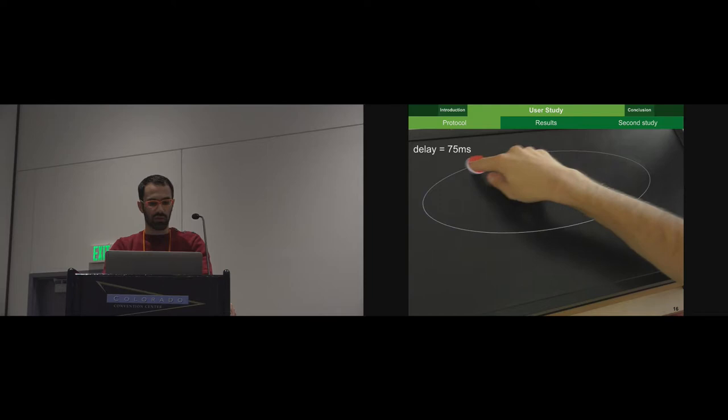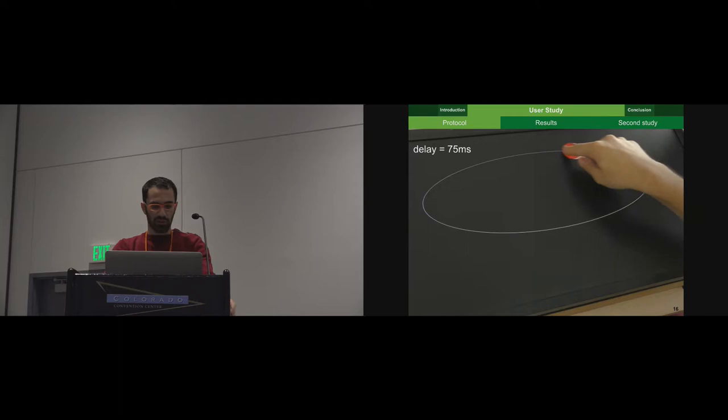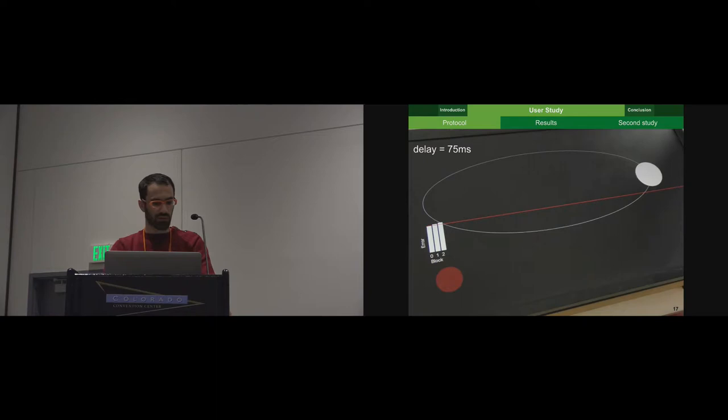So participants have to manipulate a red disk object, and follow a target moving around an ellipse. So you can see that on the video. So this is someone performing the task with 75 milliseconds of delay. To emphasize the temporal nature of the latency, we chose an ellipsoidal tracking trajectory with variable speed. And you can see that because of the latency, depending on the target speed, the center of the disk is closer or further from the finger.